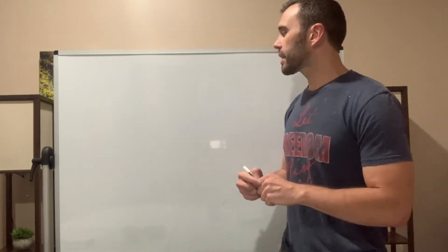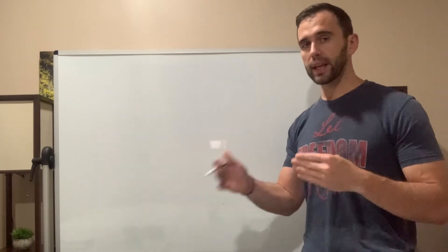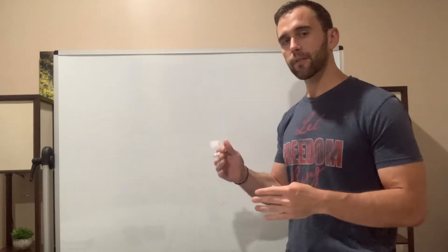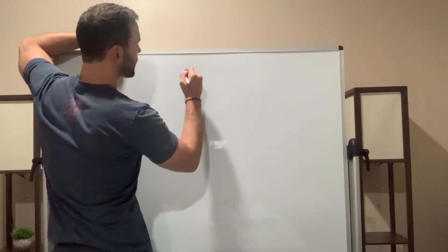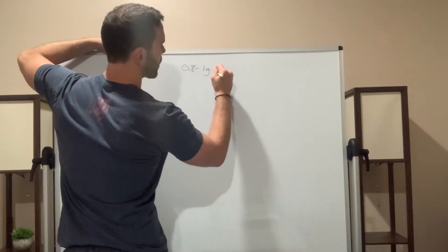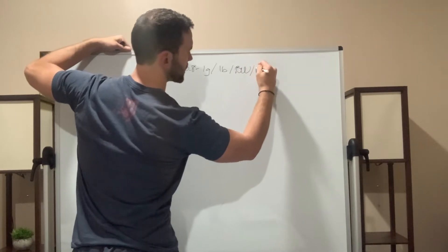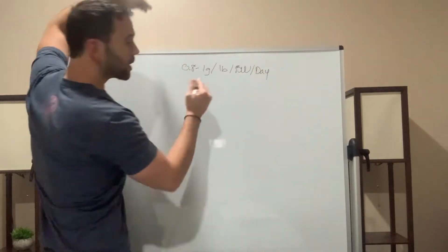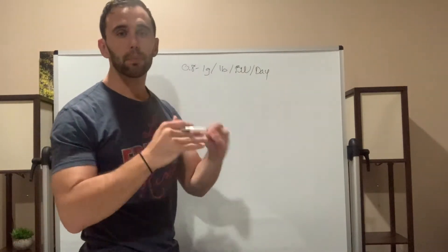What we want to look at is how much protein should you be eating per day. And this varies, especially depending on your activity level. But you want to be eating at least 0.8 to 1 gram per pound of body weight per day. This is how much you want to be eating because this is going to at least help you maintain.